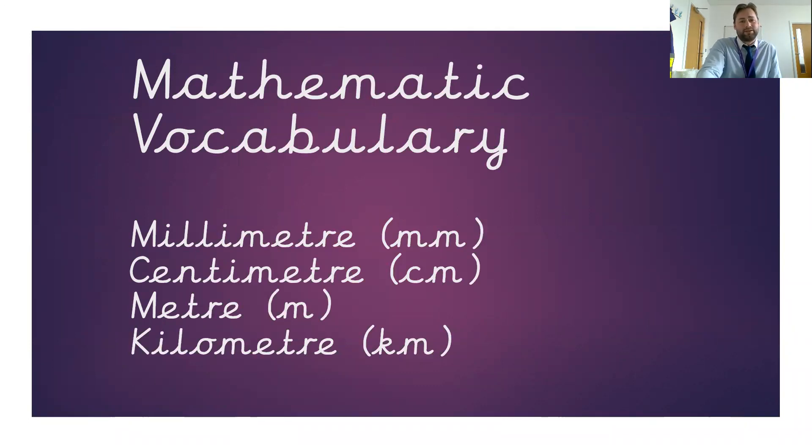Also, we've been looking at these measurements this week. But just to clarify, we've been using millimetres, centimetres, metres and kilometres. And in brackets, you can see the abbreviated term that you would use when writing them in your maths book. So mm is millimetres, cm is centimetre, m on its own is metre, and km is kilometre.